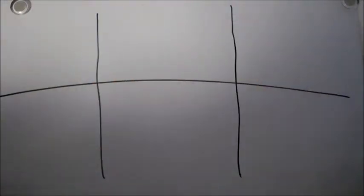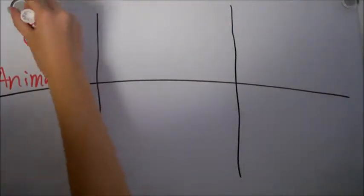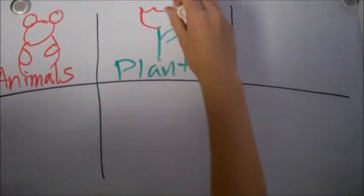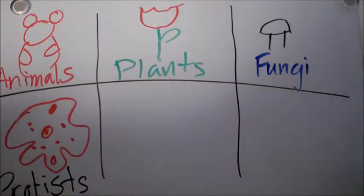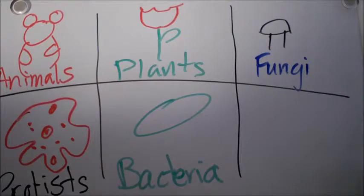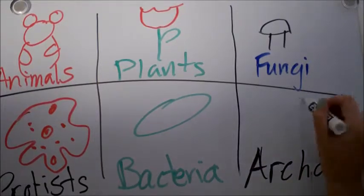Now the six kingdoms. You got your animals. You got your plants. You got your fungi. And your protists. And your bacteria. And your archaeas. Yay!